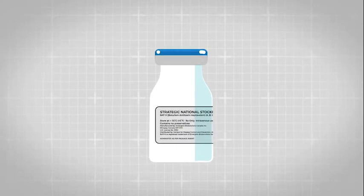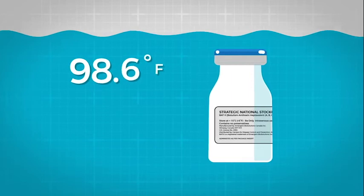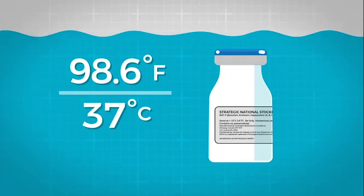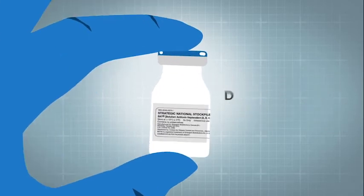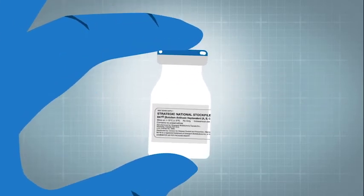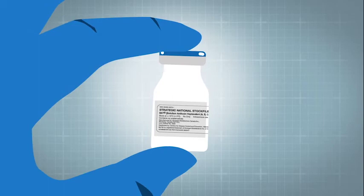If it arrives frozen, you can thaw it in a water bath at 98.6 degrees Fahrenheit, 37 degrees Celsius. Do not shake the vial. Inspect it closely. If you notice any damage to the seal or vial, discard it and notify the patient care team.